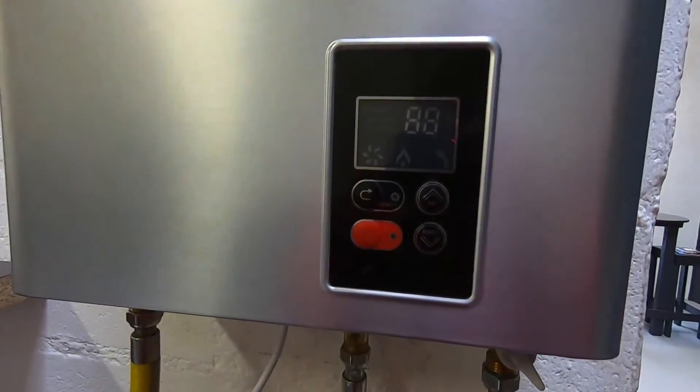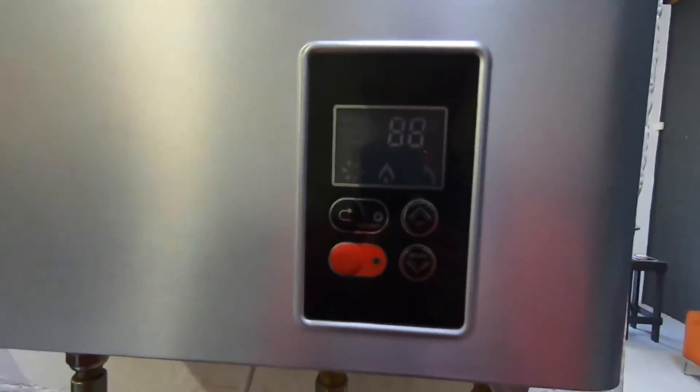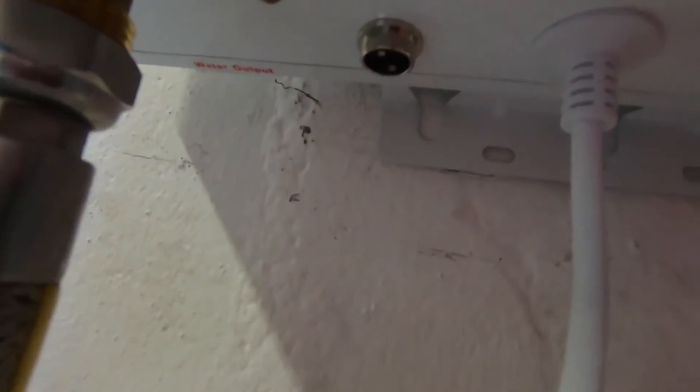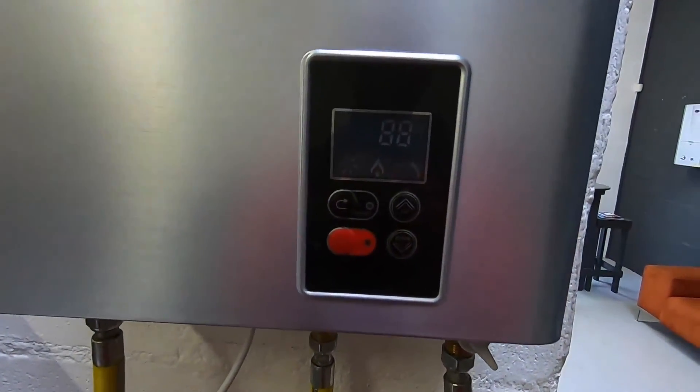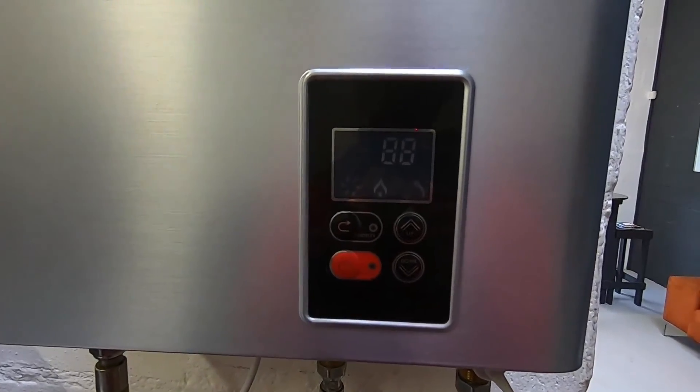To set the temperature is very simple. You can use the up and the down button. You can purchase an additional remote which plugs in underneath the geyser here which has a cord that can be run to the inside of the bathroom if the customer wishes to change the temperature on the fly.